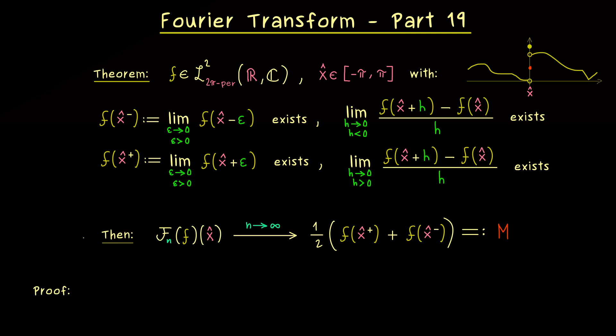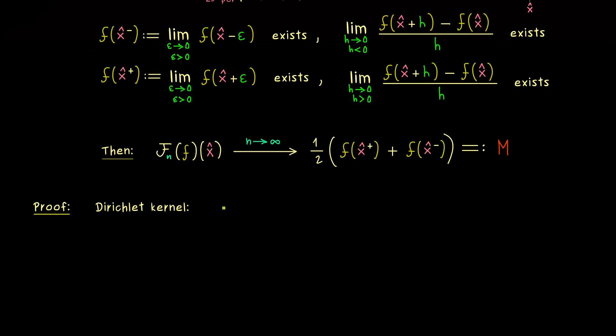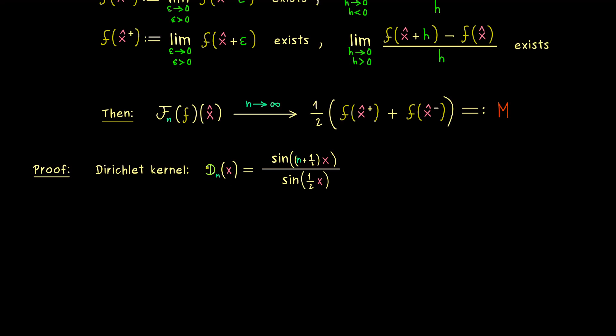OK very well this is our theorem and now we want to prove it. And there you might already know what we need is the Dirichlet kernel from the last video. It's usually denoted by D_n(x) and it's a continuous function on R and it can be written with these sine functions here. And there please note that the zeros in the denominator don't make any problems because we can extend this formula continuously even at these points. And now the good thing is that we can use this Dirichlet kernel to rewrite our Fourier series of f at the point x hat in a short formulation.